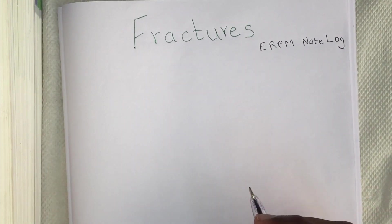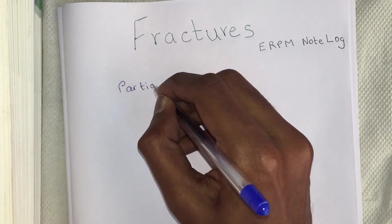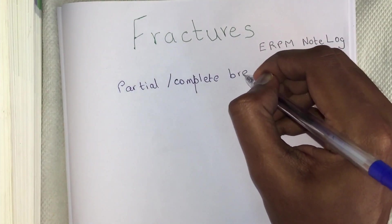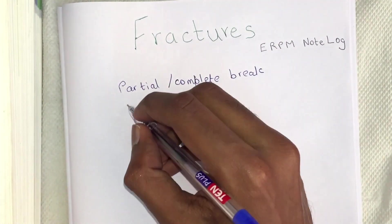Hello and welcome to ERPM note log. Today I will be teaching you about fractures. A fracture is a partial or a complete break in the anatomical continuity of the bone cortex. It should be differentiated from an osteotomy, in which there is an intentional breakage of a bone during surgery.